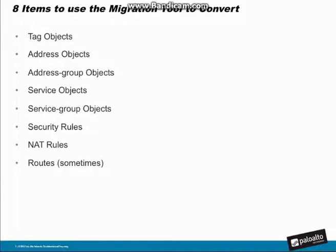These are the eight items that the Migration tool is best utilized to convert — covered in the Checkpoint video as well. Those are: tags, address objects, address groups, service and service groups, security rules, NAT rules, and sometimes routes. Those are the things you should be focusing on using the Migration tool to convert over to PanOS.